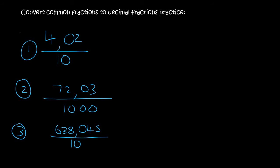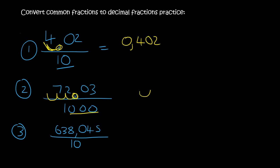Okay, let's try another three. The first one already has a 10 at the bottom, so the decimal just has to move once — it moves to the front, so the answer is 0.402. Now the next one has three zeros, so we're going to move the decimal three places: 1, 2, 3. We end up with an empty space, then a comma, then 7203. Inside that empty space put a zero, and if the front is also empty put another zero. So the answer is 0.07203.